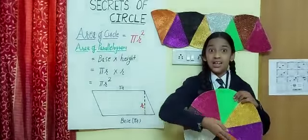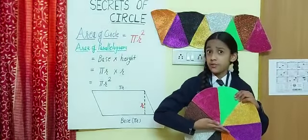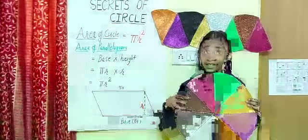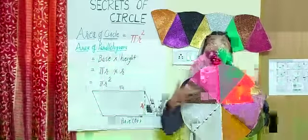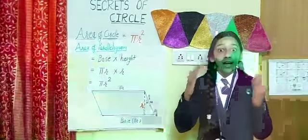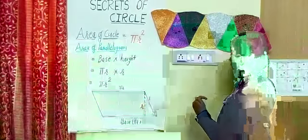Now, let's learn about space occupied by a circle. I have a beautiful circle which is divided into 8 equal parts. These 8 equal parts are arranged in a shape called parallelogram. The area of parallelogram is base into height.